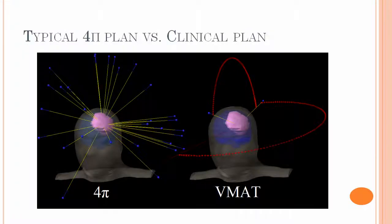So here we have a typical 4Pi plan versus a clinical plan, the VMAT plan. And as you can see, the 4Pi plan uses many more non-coplanar beams, whereas in the VMAT plan, you see it uses one coplanar arc and one non-coplanar arc.